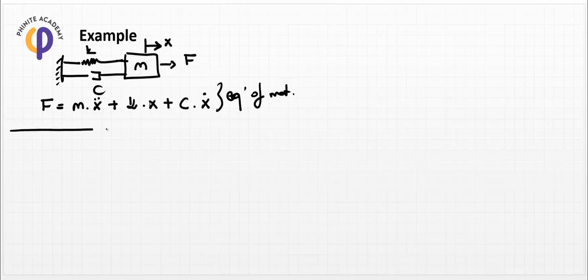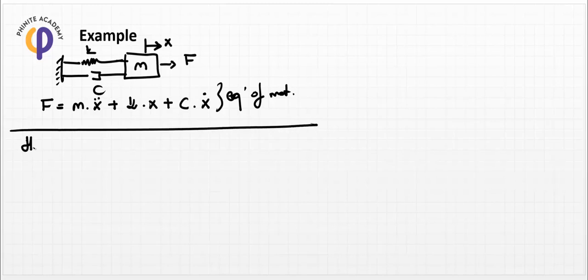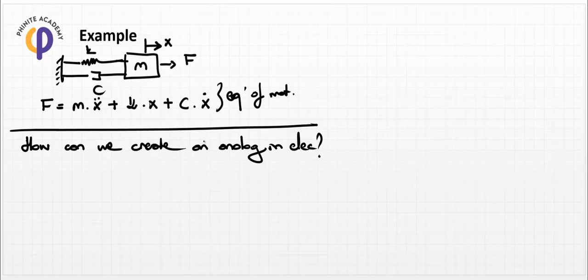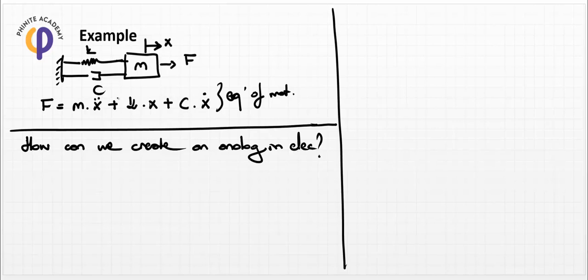In system analogy modeling, how can we create an analog in electricity — how can we draw this system like an electrical circuit? Every model in mathematics and system dynamics can be converted into an electrical equivalent. To use analogy models, we need to implement the analogy mapping or transformation.